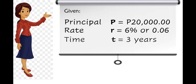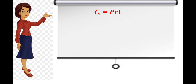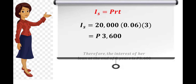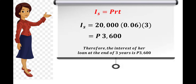Given: principal is 20,000 pesos, rate is 6% or 0.06, and time is three years. So I sub S is equal to PRT. I sub S is equal to 20,000 times 0.06 times 3, which is equal to 3,600 pesos.